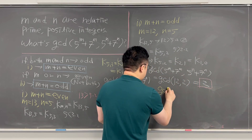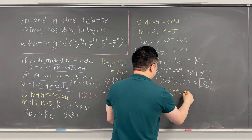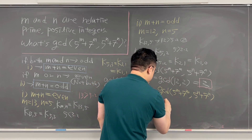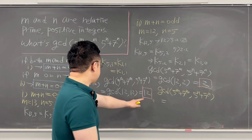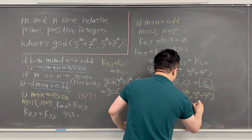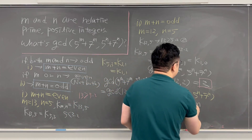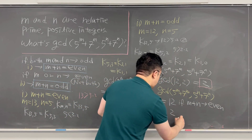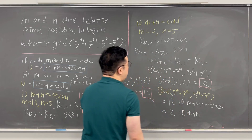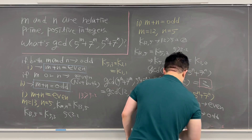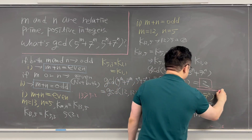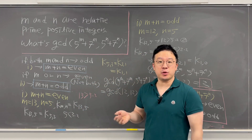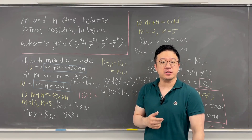So the GCD of 5^M + 7^M and 5^N + 7^N equals 12 if M + N is even, or 2 if M + N is odd. That's the final answer to this interesting algebra question from the Japanese Math Olympiad. I'll be back with more questions like this soon.